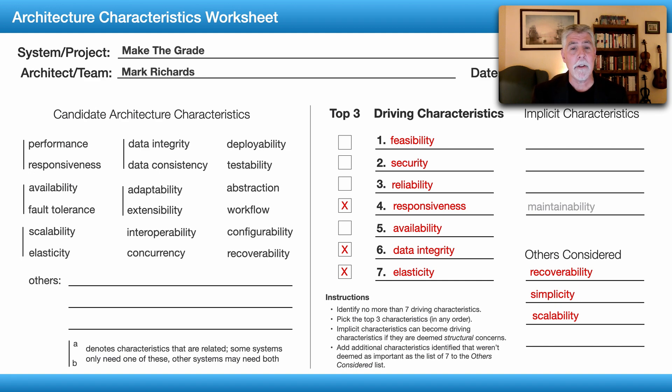Do we have risk? Notice the top three here are responsiveness for that student, data integrity to make sure we don't lose any answers, and elasticity so that we can scale up and down as more students take the tests concurrently. Are those okay? Do we have any risk in those particular important areas?